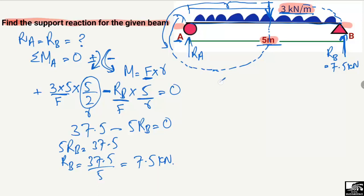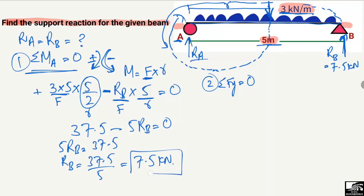Now to find R_A, we use the second equilibrium equation: the summation of vertical forces equal to zero. The upward forces are taken as positive and the downward forces are taken as negative — this is again our sign assumption.